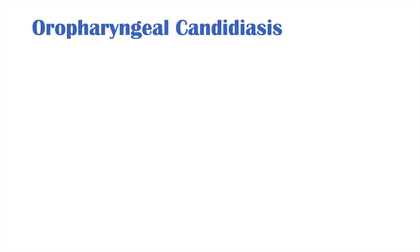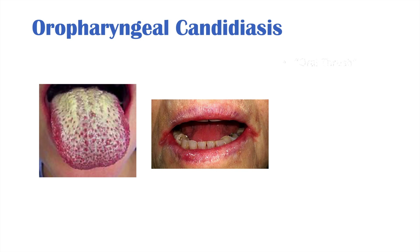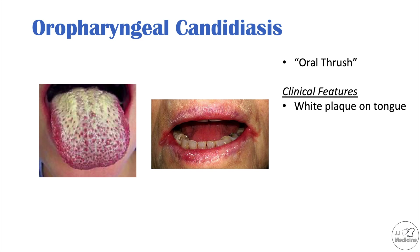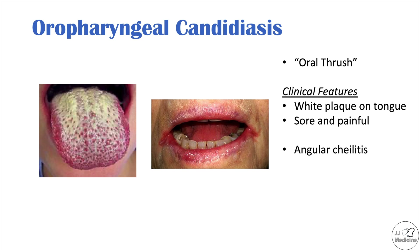The first type of candida infection is oropharyngeal candidiasis, also known as oral candidiasis or oral thrush. Clinical features include white plaques on the tongue, and a sore and painful tongue or mouth. Subtypes include angular cheilitis, where cracks appear on the side of the mouth — commonly seen in older adults. There can also be dysphagia, meaning patients may have difficulty swallowing if there is a significant infection.